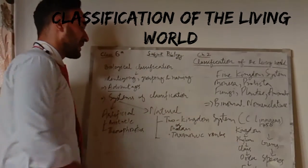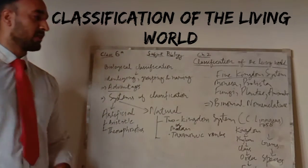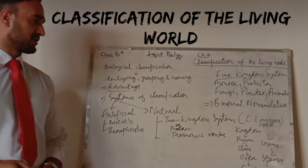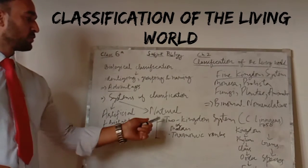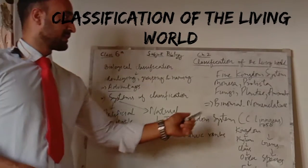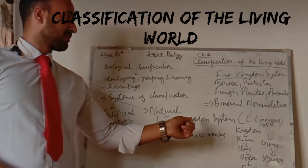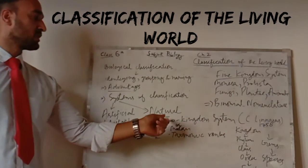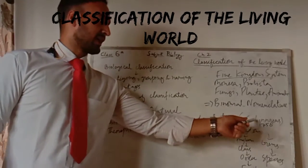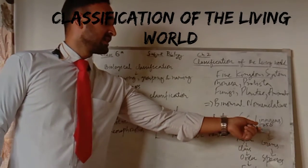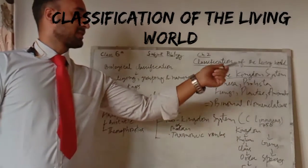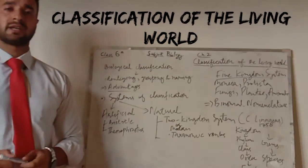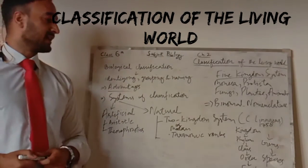The next system is called the natural system of classification. It has two kinds: the two-kingdom system of classification and the five-kingdom system of classification. The two-kingdom system was given by Carolus Linnaeus in 1758, and the five-kingdom system of classification was given by R.H. Whittaker in the year 1969.